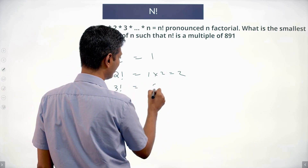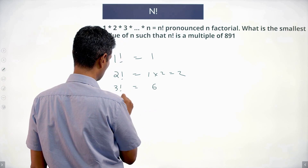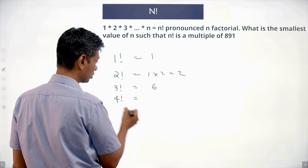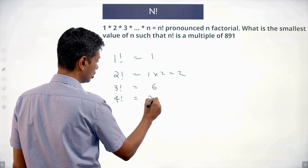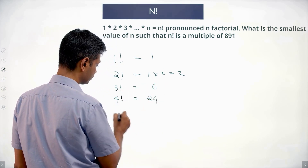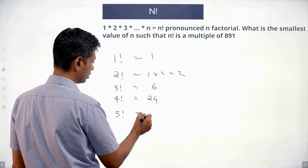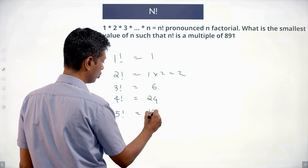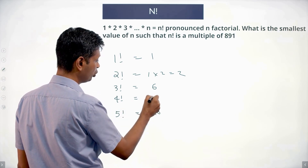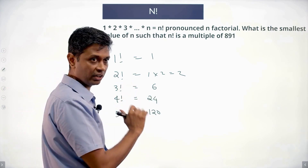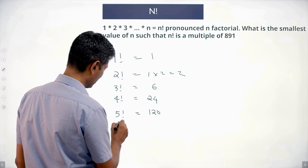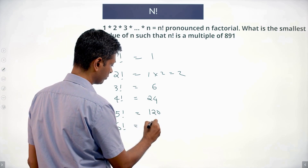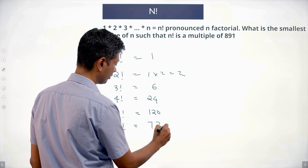2 factorial into 3 is 6. 4 factorial is 3 factorial into 4, which is 24. 5 factorial is 24 into 5, which is 120. That is 1 into 2 into 3 into 4 into 5. 6 factorial is 120 into 6, which is 720.